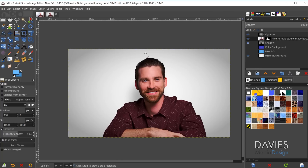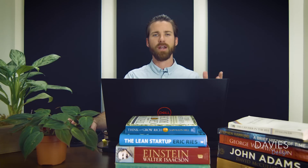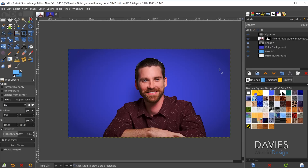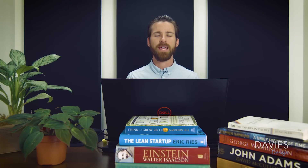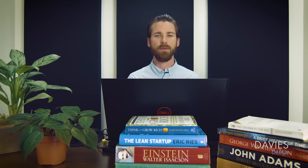We're going to cut out everything around the subject and only have the color background. You can see I have a white background set up, but you can also use a light blue or dark blue — whatever background color you want. This method is going to use a combination of the foreground select tool, the paths tool, and layer masks. It sounds like a lot of work but it's going to be pretty quick and easy.